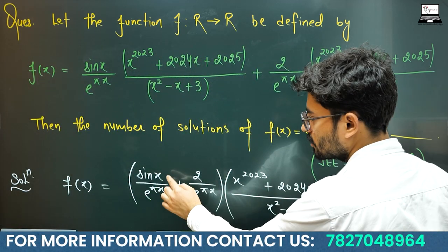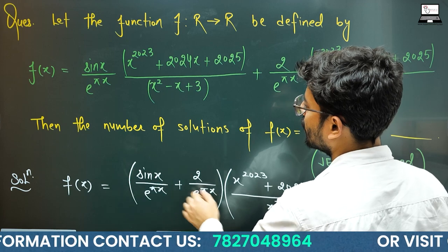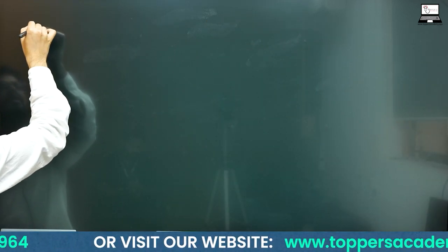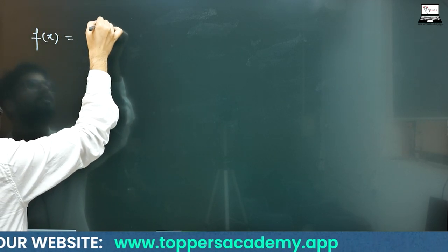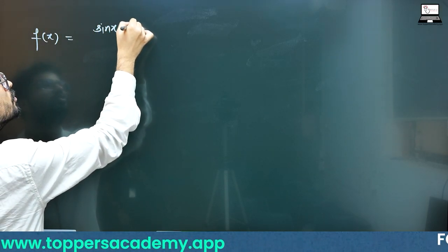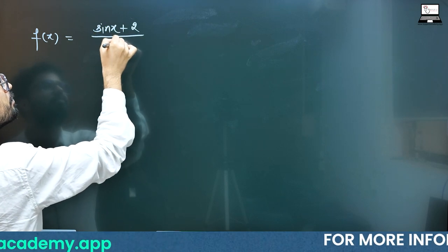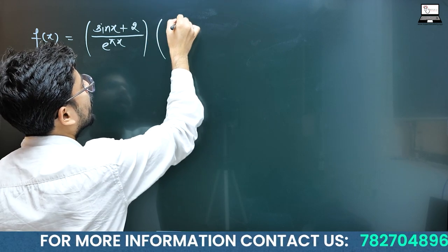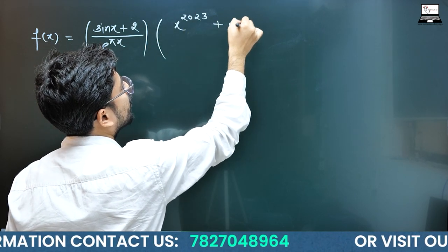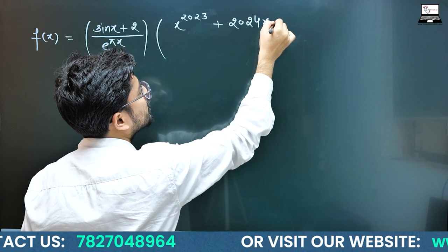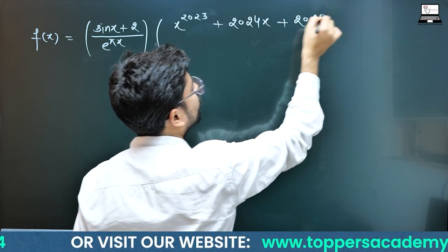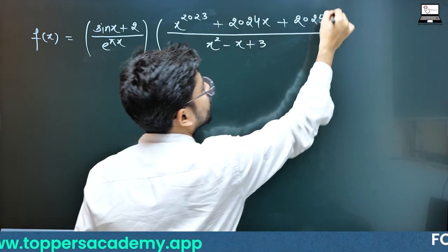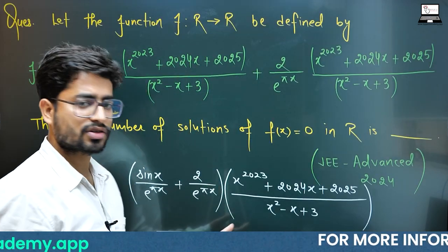Now you can observe one more thing here. When you write your f(x) again, f(x) is equal to (sin x + 2) upon e^(πx) into (x^2023 + 2024x + 2025), the whole divided by (x² - x + 3). Okay? That is your f(x).